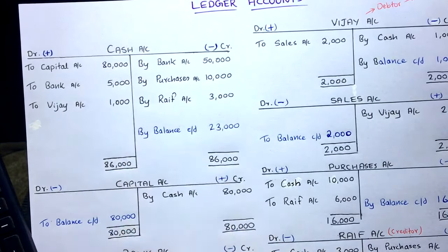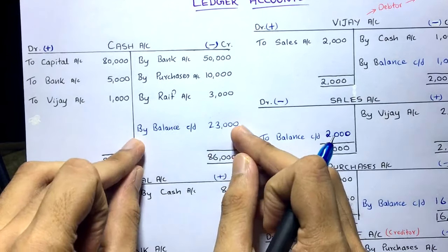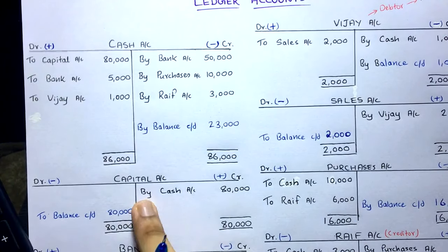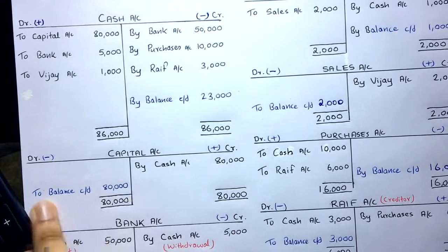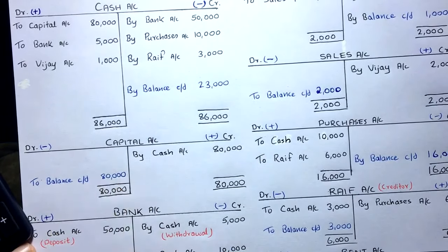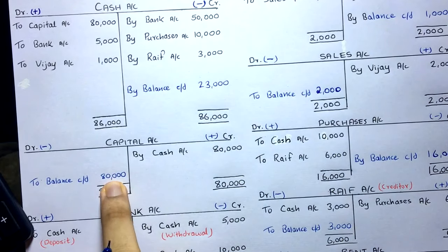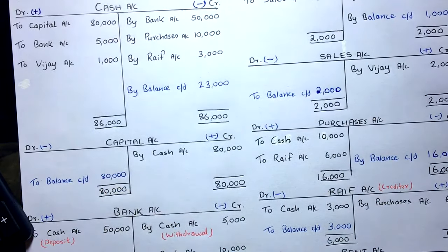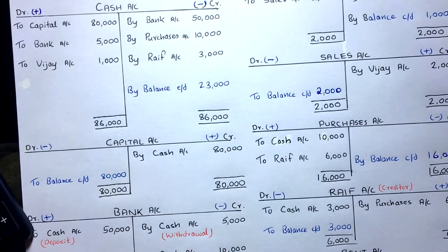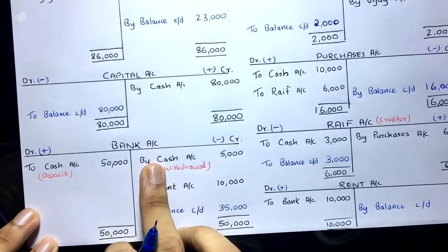The closing balance on the credit side will move to the debit side in the next accounting period as 'balance brought down' — that's why cash account always has a debit balance. For the Capital Account, 80,000 is on the credit side only, so balance carried down is 80,000. The interpretation: the owner has invested 80,000 in the business and has not made any drawings, so the owner's claim on the business is 80,000.